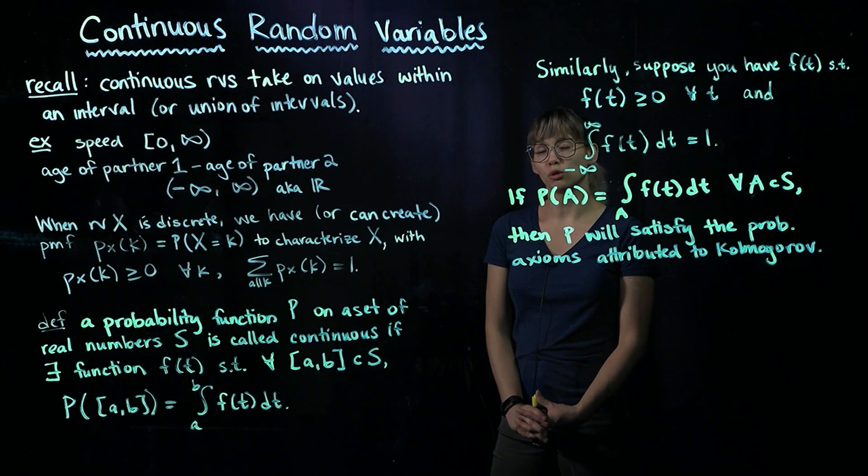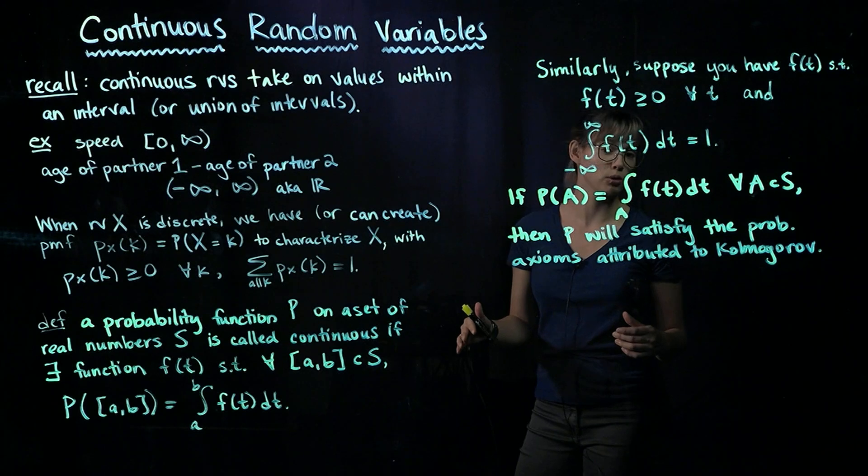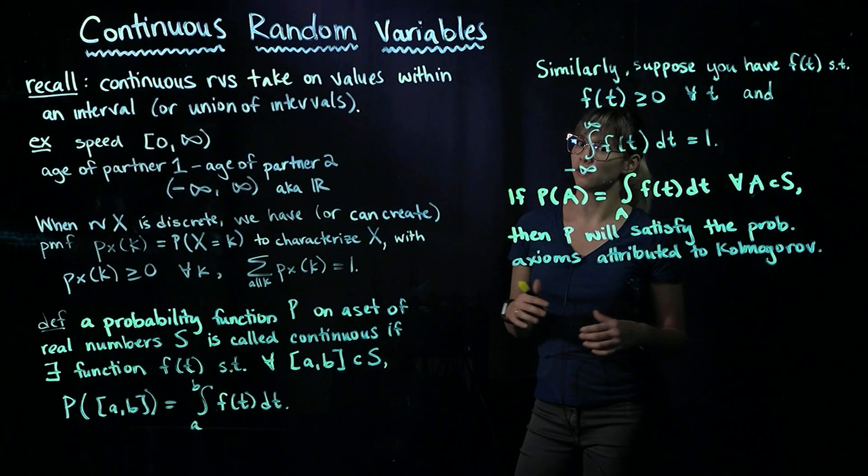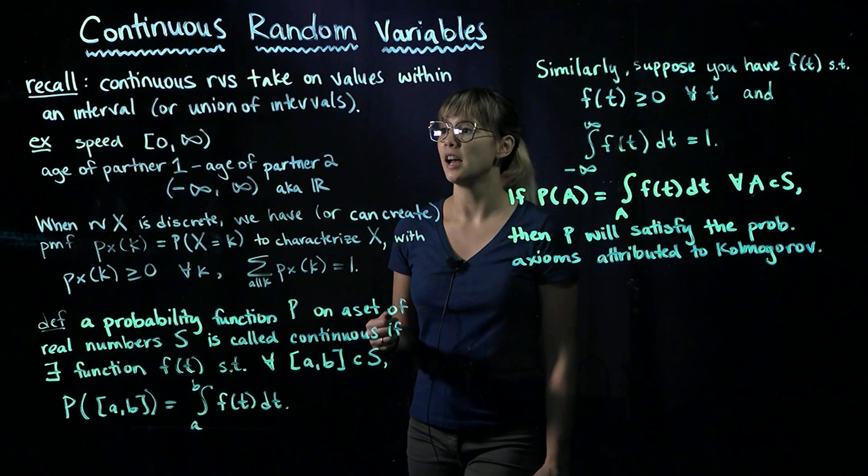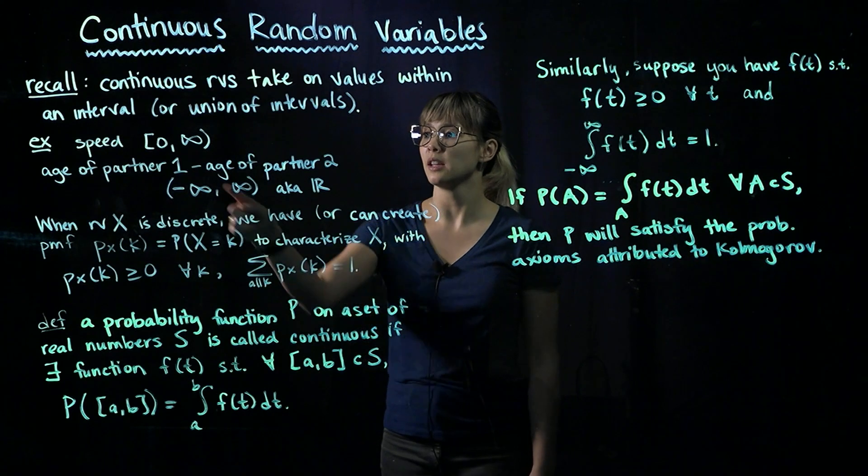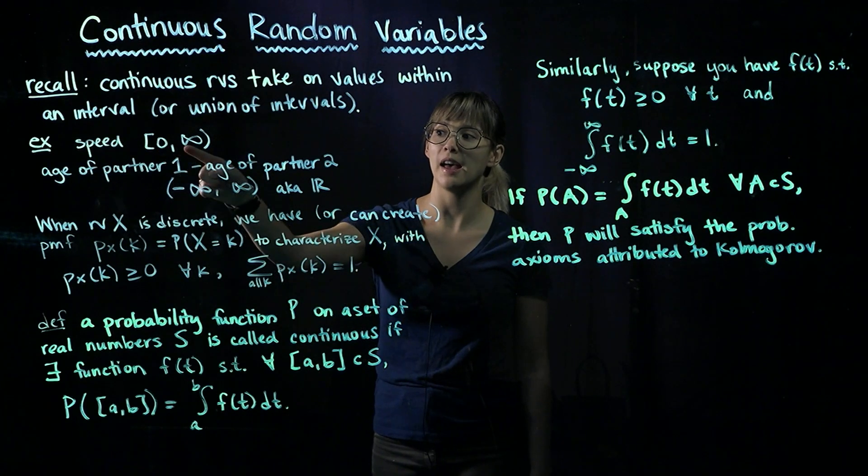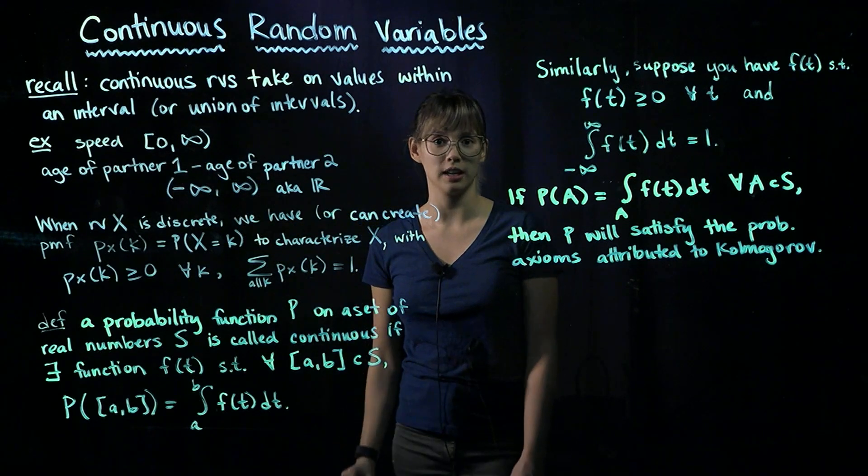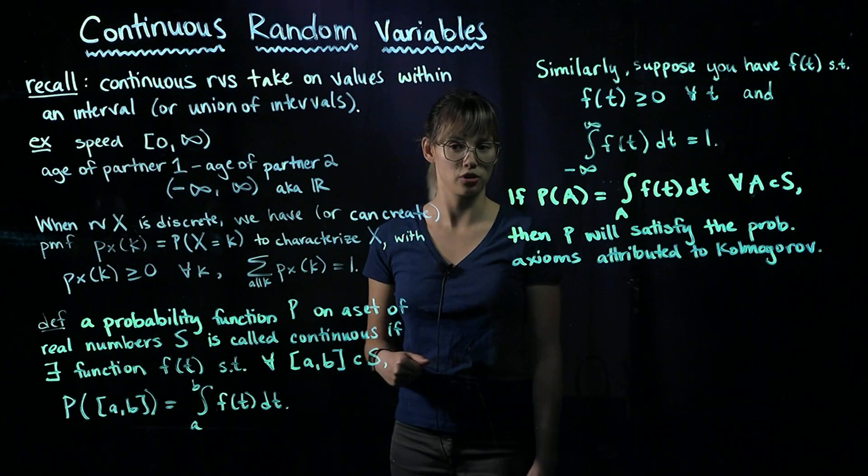Usually the way that we describe the values that the continuous random variable could take on is with an interval or maybe a union of intervals. For example, we could be looking at the speed of a car, and this speed could be anywhere between zero, including zero, and then up to but not including infinity. So there's no upper limit to how fast a car could travel.